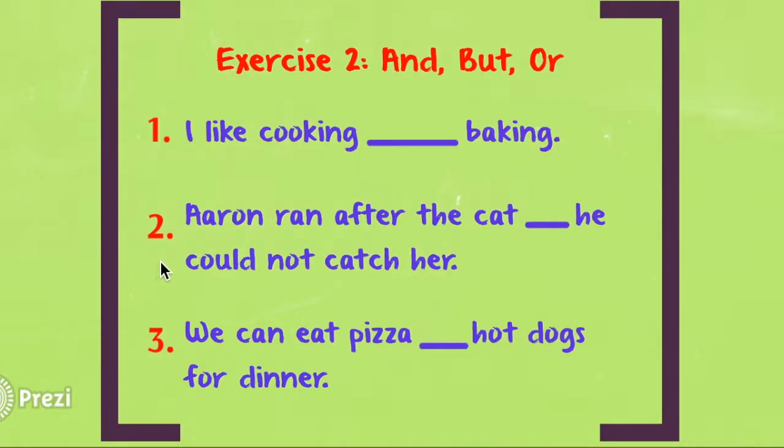For number two, it says Aaron ran after the cat blank. He could not catch her. Here it looks like we are contrasting. So which word would we use to contrast? Well, we would say Aaron ran after the cat, but he could not catch her.